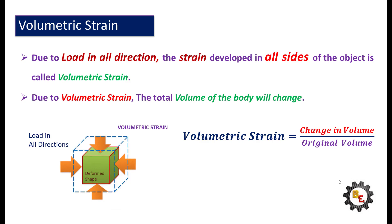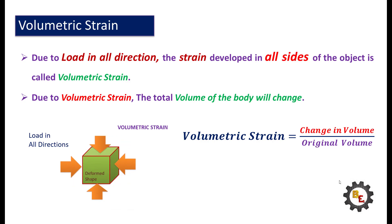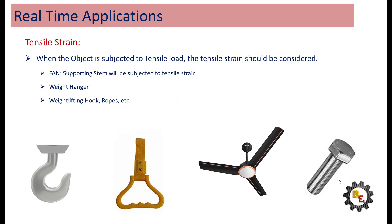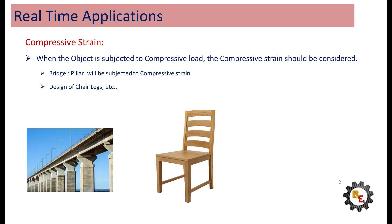Let us see some real-time applications where we have to concentrate more on the strain. When tensile load is applied on the object, tensile strain will be produced. Examples: weight lifting hook, support hanger, stem of the fan, etc. When compressive load is applied on the object, compressive strain will be produced.